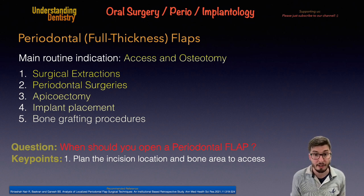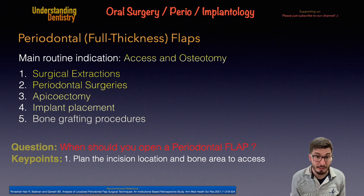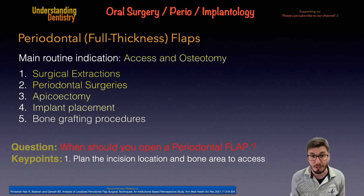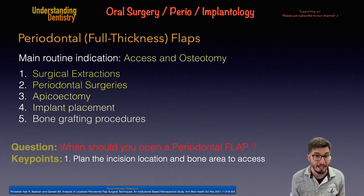You may want to do an open flap debridement or a crown lengthening procedure, which might include osteotomy as well. Then apical surgeries, to get access to and remove a periapical lesion. Also implant placement procedures, where we place implants in the alveolar bone, and bone grafting procedures where we access the native bone or maxillary sinus. This is required prior to implant placement when the patient lacks bone height or bone width.